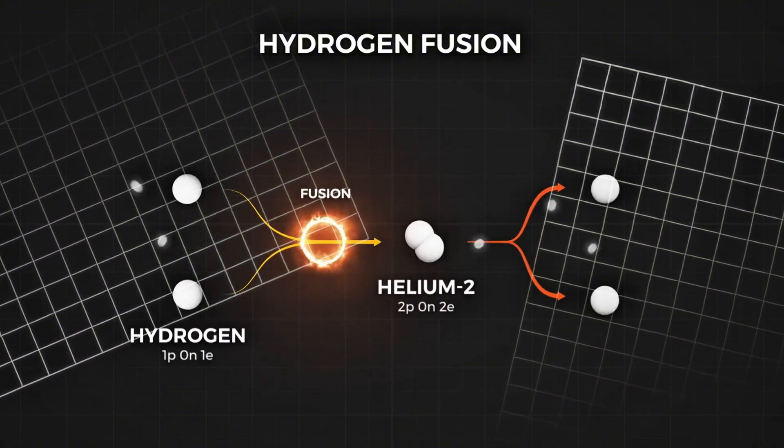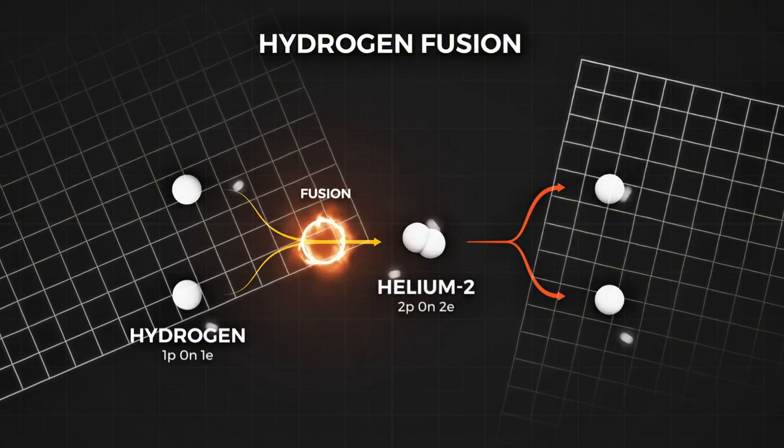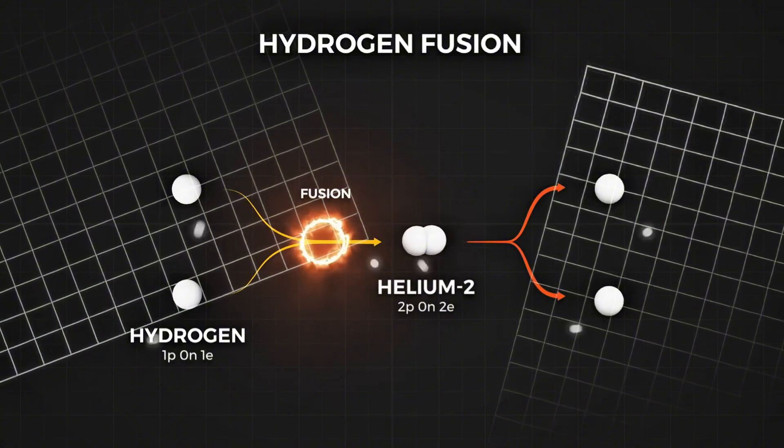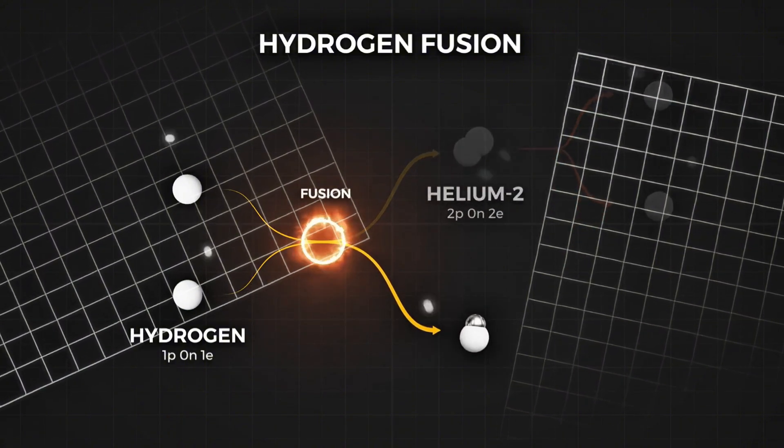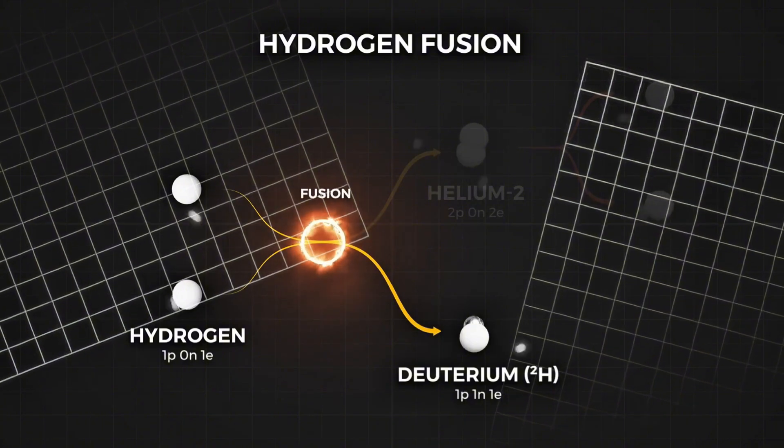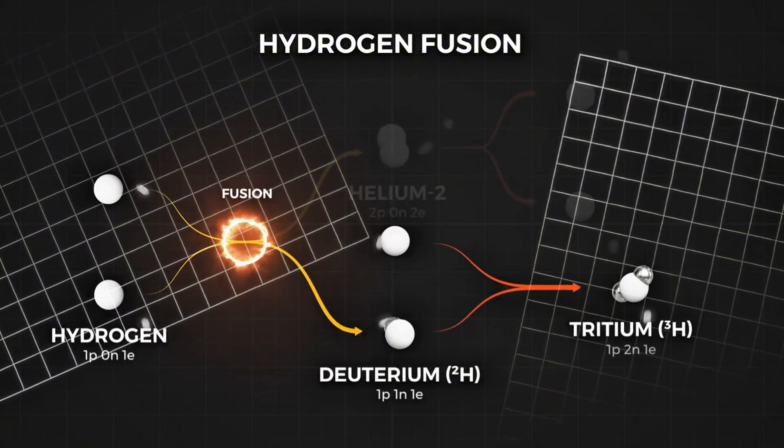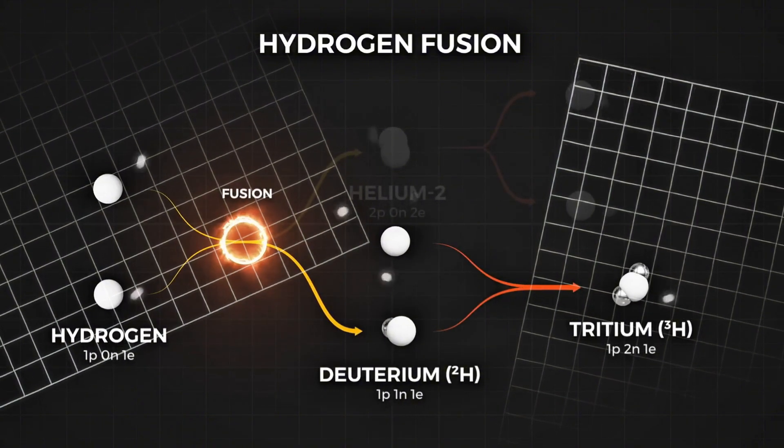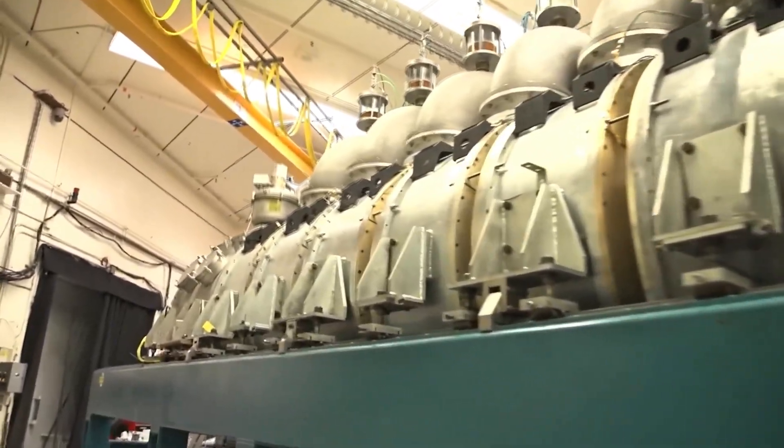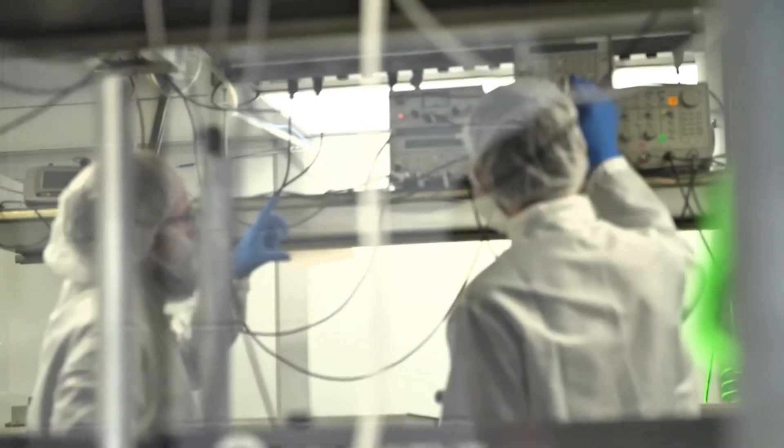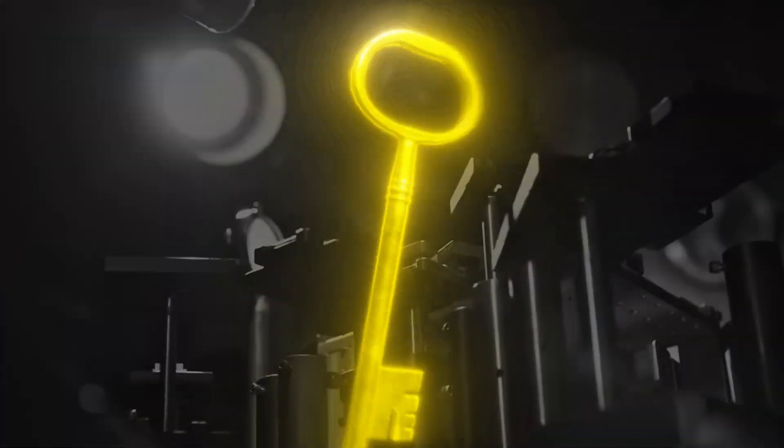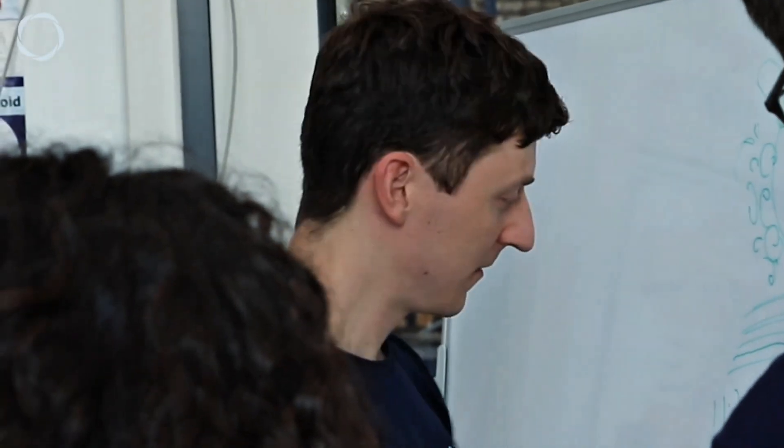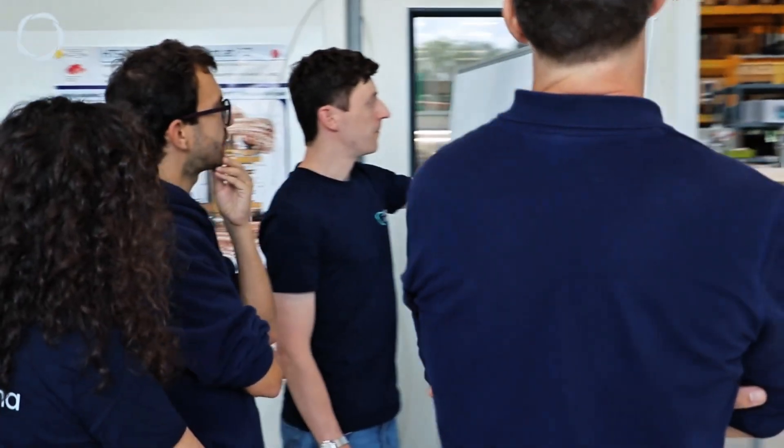To hold and heat this plasma, researchers use powerful magnetic fields or extremely intense lasers. Magnetic confinement fusion, as in tokamak and stellarator reactors, and inertial confinement fusion using lasers, are the two main approaches being pursued. The main scientific challenge is keeping the plasma hot and dense enough for long enough that the energy output from fusion exceeds the energy input. Proxima Fusion is tackling this challenge by developing advanced magnetic confinement technology and designs to hold and heat the plasma efficiently.